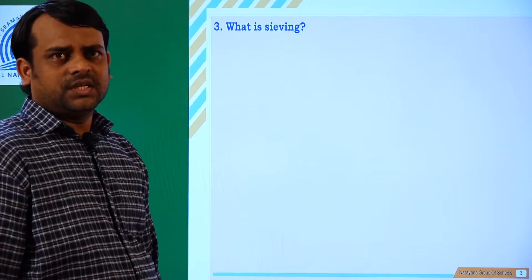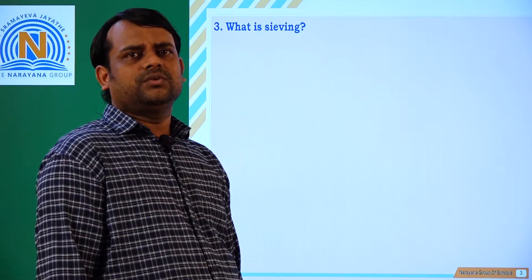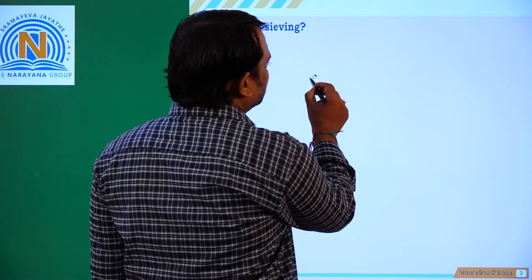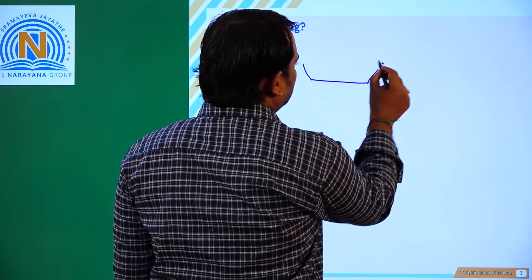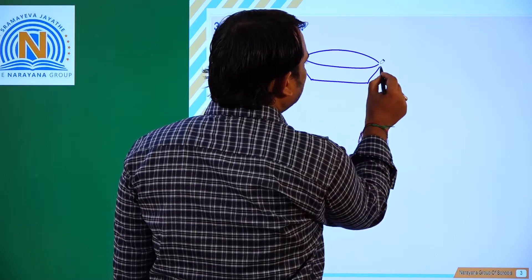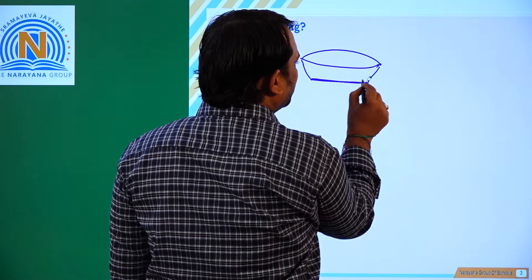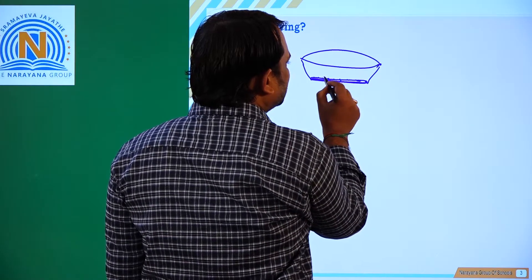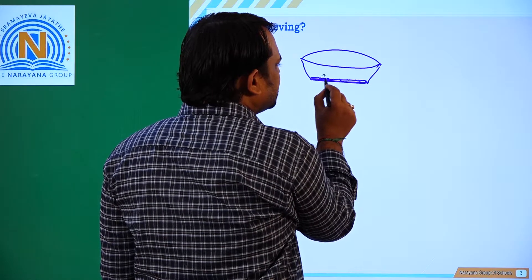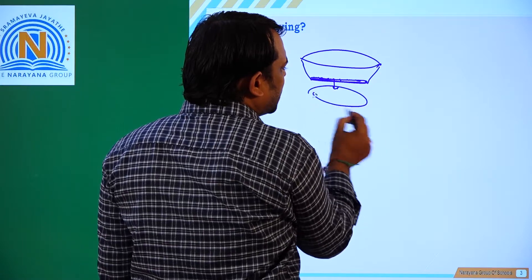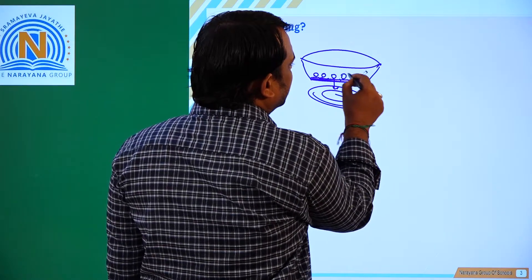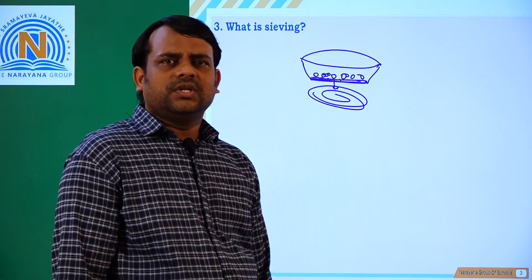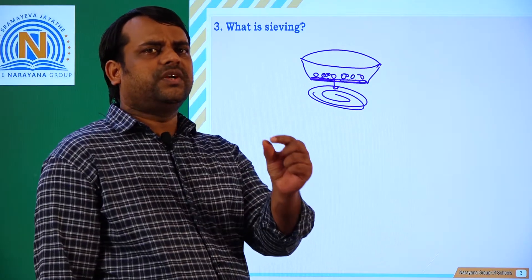What is sieving? Sieving is a technique to separate particles which differ in their size. A porous sieve has tiny holes — particles with size greater than the holes are retained on top, while smaller particles pass down through. This process is called sieving, meaning we use a sieve to separate particles that are different in size.